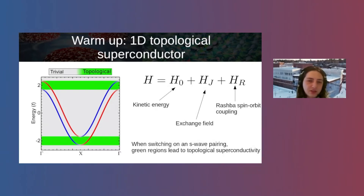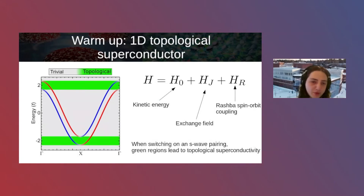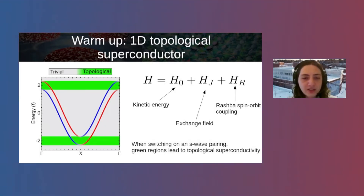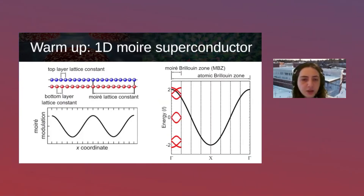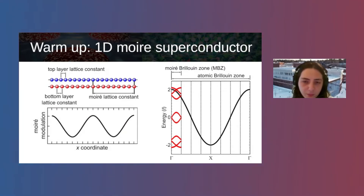Two-dimensional materials can be misaligned, and the sample showing topological superconductivity certainly had a moiré pattern. To understand its relevance, consider a simple one-dimensional system with a moiré pattern. Without a moiré, topological superconductivity can only occur at the very top and bottom of the band, where we have a parabolic dispersion needed for helical states. When a moiré pattern is added, bands get folded into minibands, creating new miniband tops and bottoms.